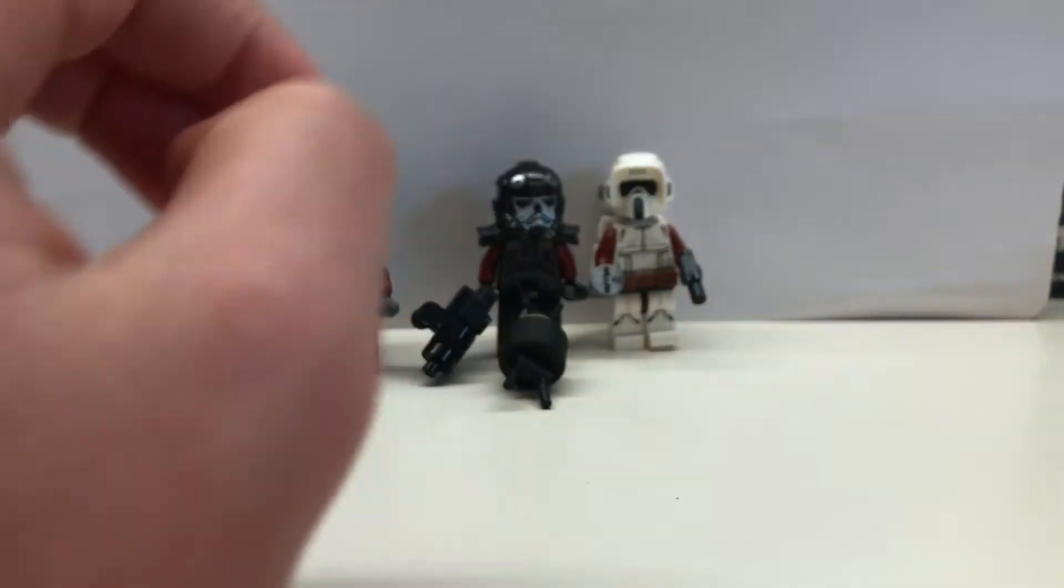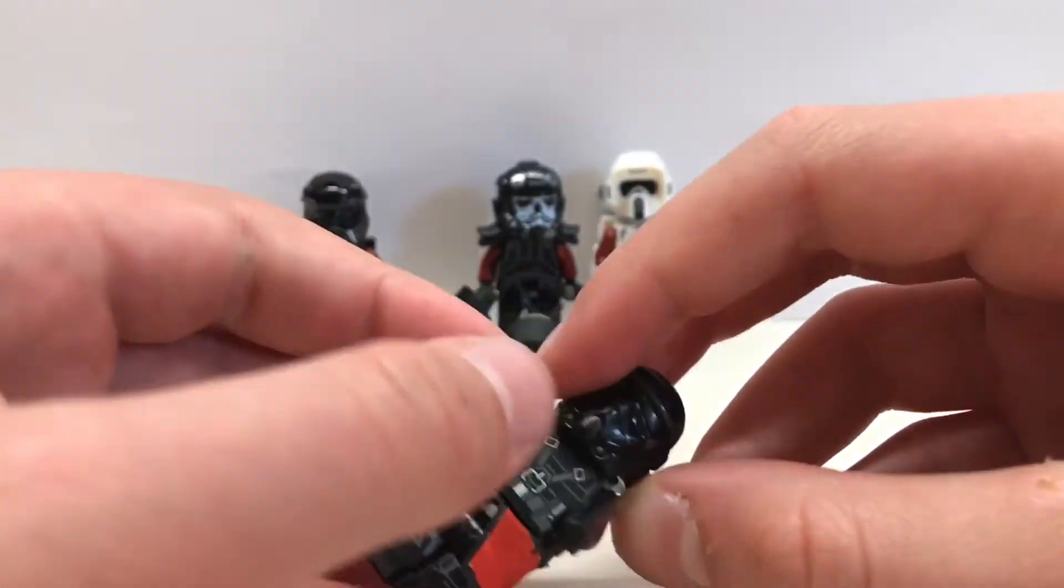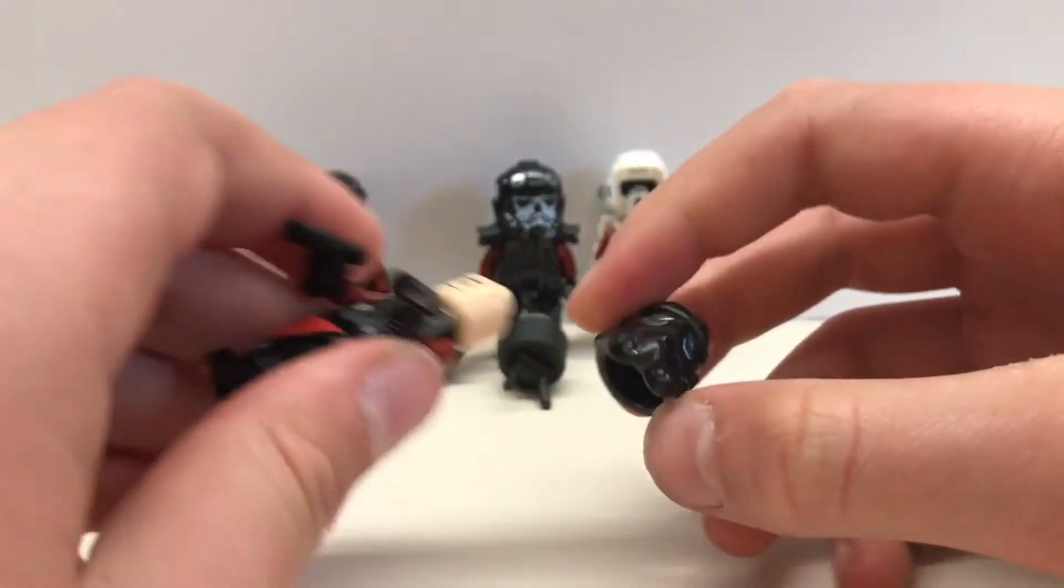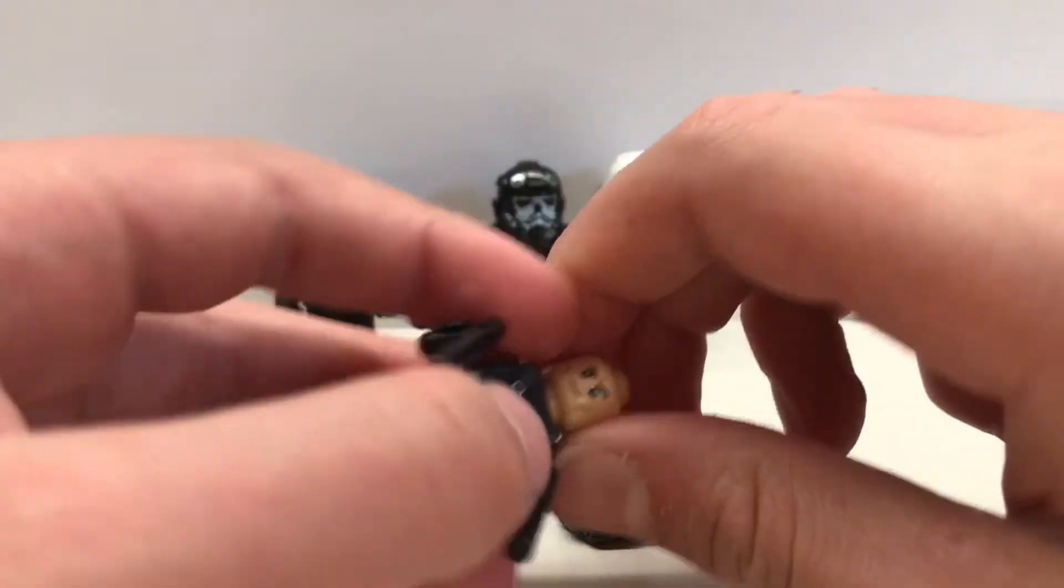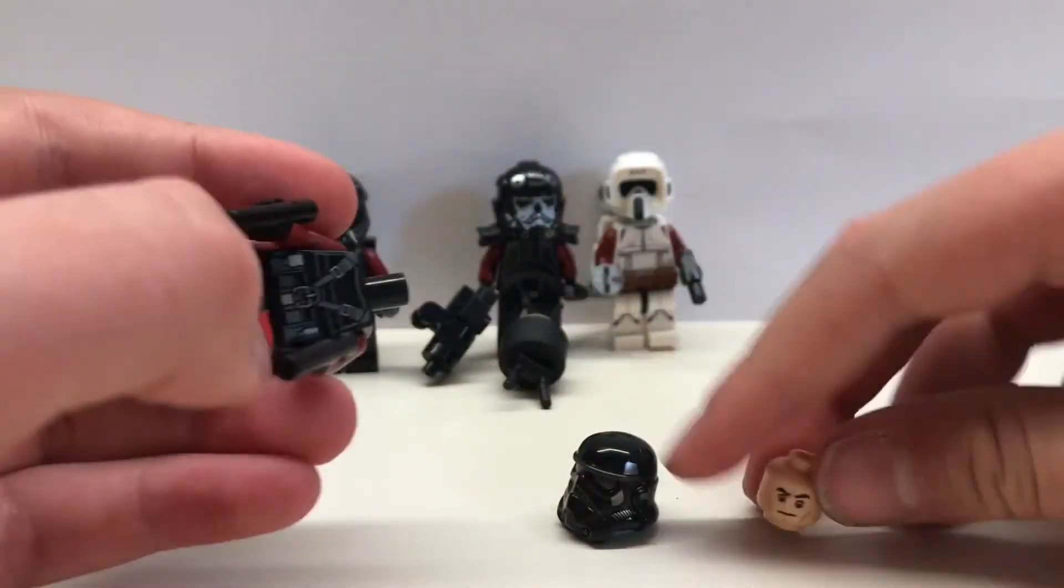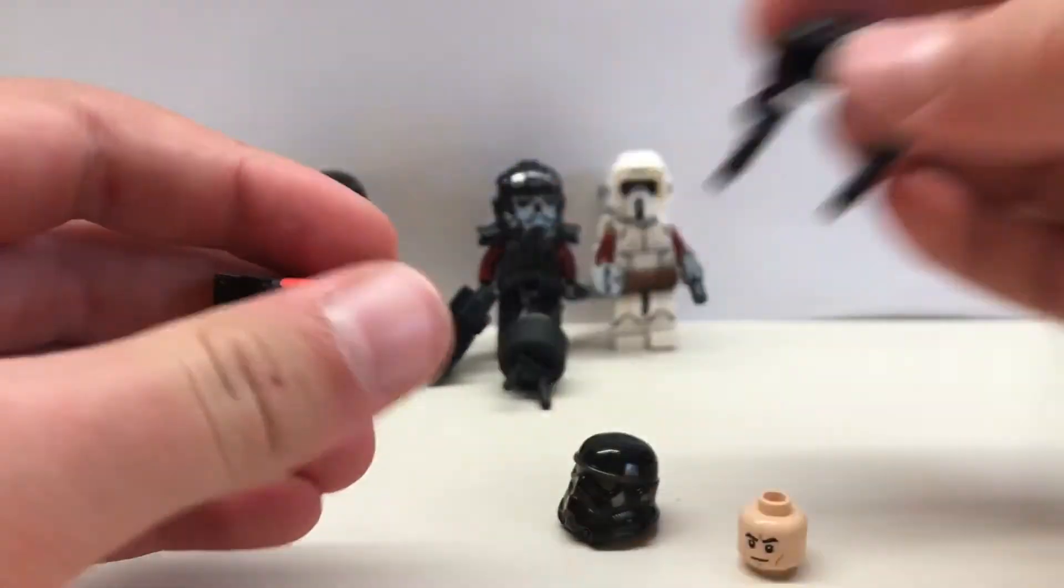And then Echo is made using this Imperial black shadow trooper helmet, the straight-faced clone helmet head.